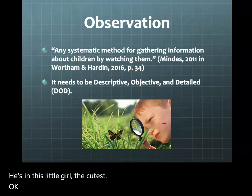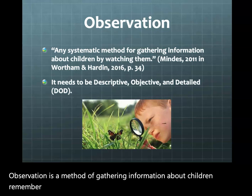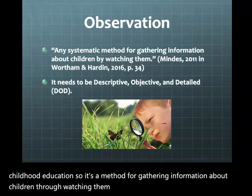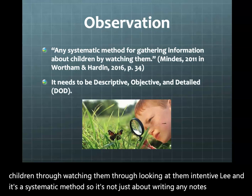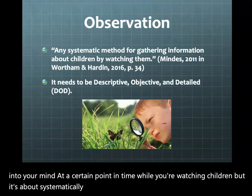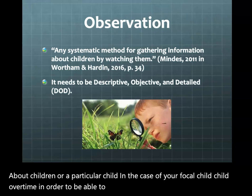Let's move on to observation. Within early childhood education, observation is a method of gathering information about children through watching them intentively. It's a systematic method — not just writing any notes that come to mind while watching children, but systematically gathering information about a particular child over time in order to learn about how that child learns, develops, and grows.